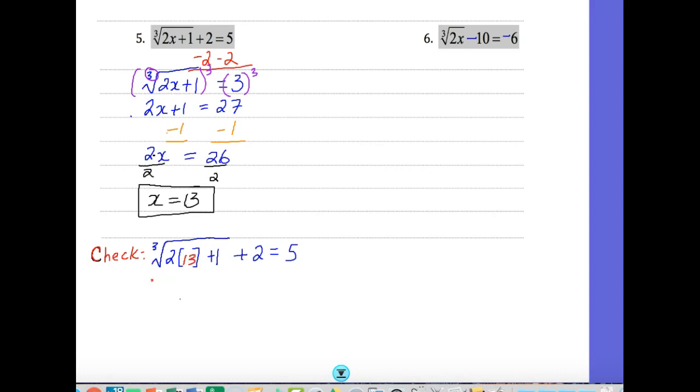Now we'll have the cube root of 27, right? 2 times 13 is 26, plus 1 is 27, plus 2 on the outside. Does that equal 5? Be careful, you're not looking for a square root, it's a cube root. What number cubed is 27? It is 3. So 3 plus 2 equals 5. It does, so our answer works.